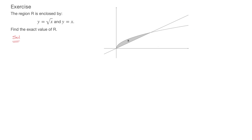Looking at the illustration, the first thing I'm tempted to do is label each of the two curves. We're told one is y equals the square root of x and the other is y equals x. Looking at the graph, it's quite clear that y equals x is the straight line. So I'll label that as y equals x, and the other curve is therefore y equals the square root of x.